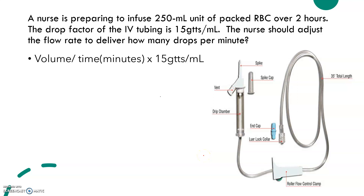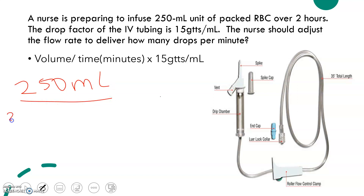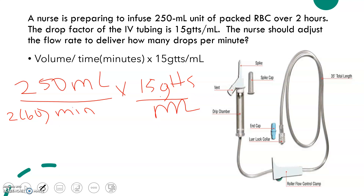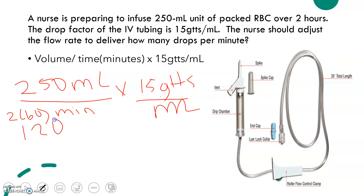The volume is 250 ml over 2 times 60, and this is minutes. The reason why we have 2 times 60 is because one hour is equal to 60 minutes. So to find out how many minutes are in 2 hours, you multiply by 60, and we get 120 minutes.